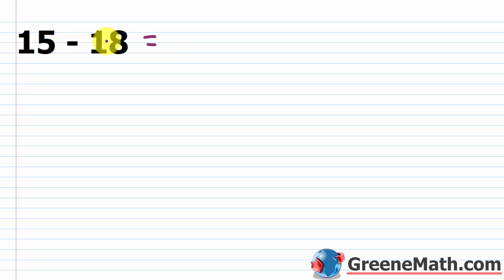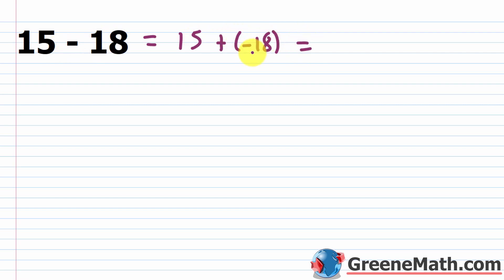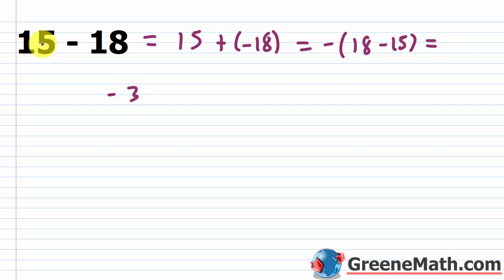Now we'll do one without a number line. For 15 minus 18: leave the first number unchanged, so 15 stays as 15. Change subtraction to addition, and change the number being subtracted into its opposite, giving 15 plus negative 18. Negative 18 has the larger absolute value, so the result is negative. Then 18 minus 15 is 3, so the final answer is negative 3. If I start with $15 and spend 18, I spent 3 more than I had.